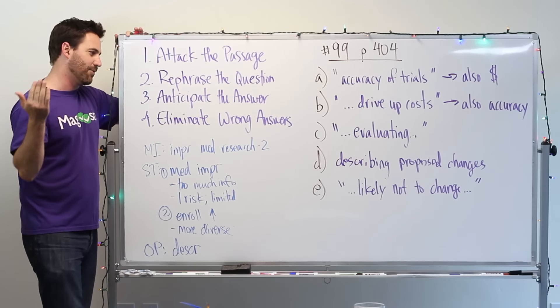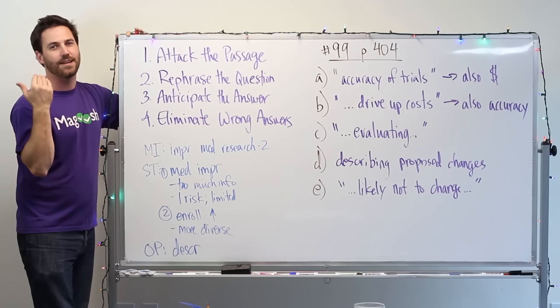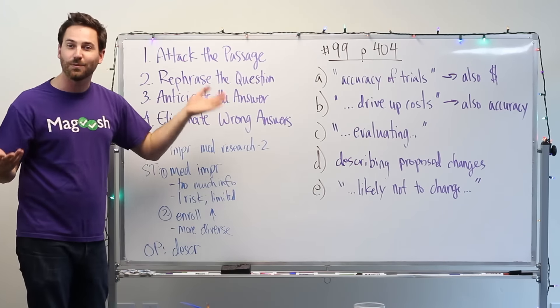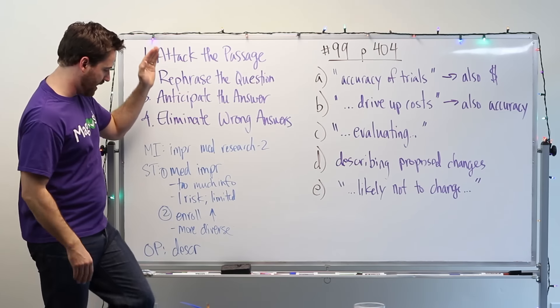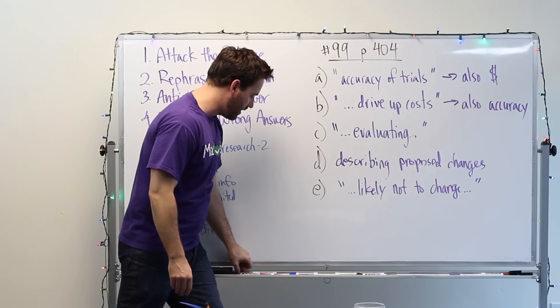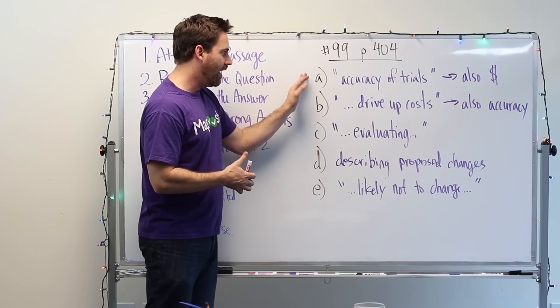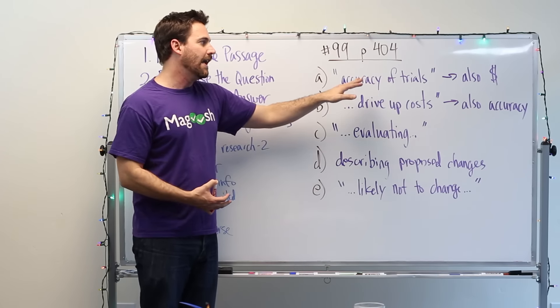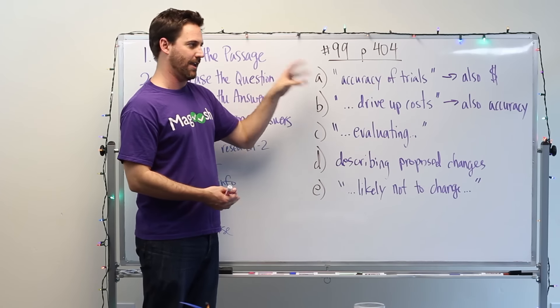Remember, there's more wrong answers than right answers. So it's easier to just dive in and find answers that are wrong and get rid of them until you have two, maybe just one answer left to choose. So I'm going to move over and get my pen. So in answer choice A, they mention the accuracy of the trials and only that. And so this is sort of a too narrow answer trap.